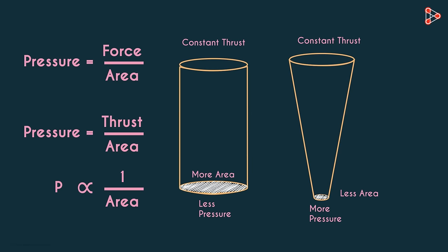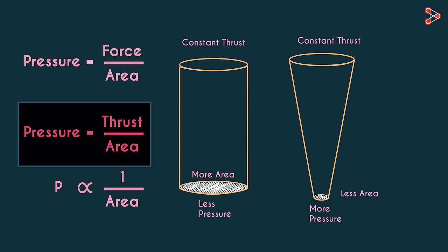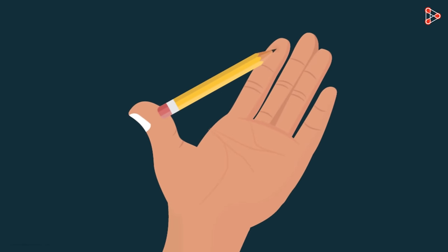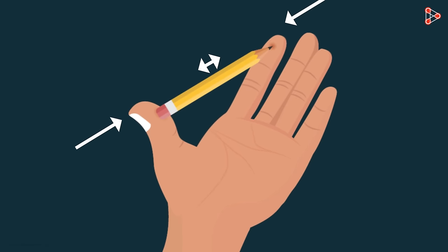Now we can understand the two situations in terms of this formula. What happened in the first situation? As we apply an equal force from both ends, then as per Newton's third law, the pencil will also apply an equal and opposite force on the fingers. But the depression was more on the index finger.